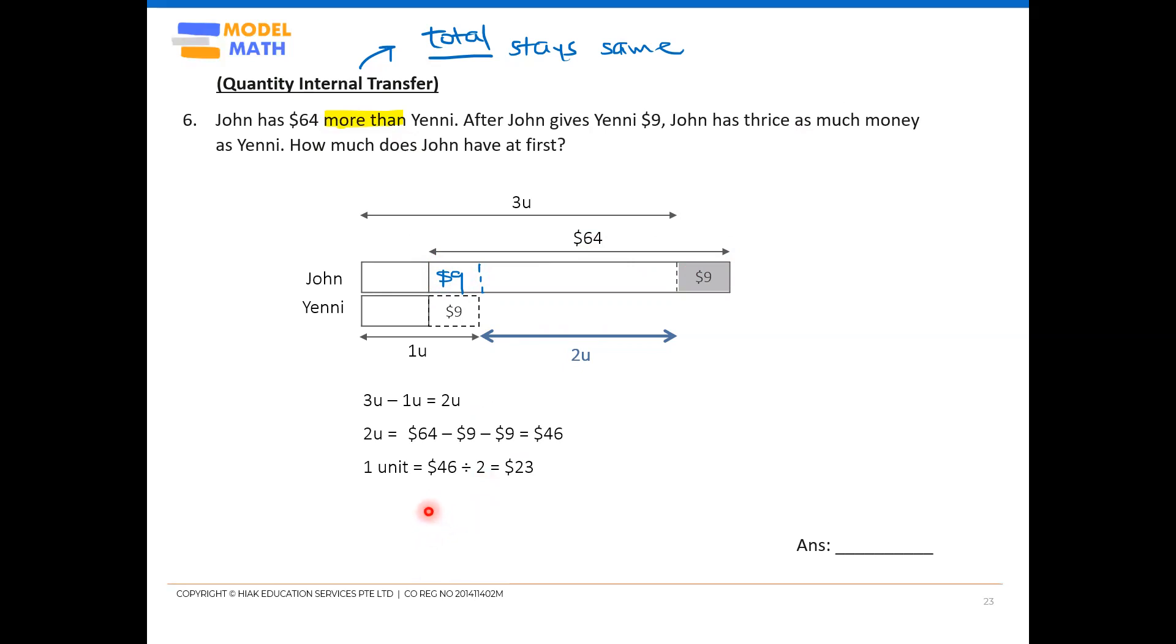So once this is done, read the question. They want John at first. Every time you want to reread the question, you want John at first. Now identify where is John's at first. So John at first, is it just the white portion or is it the whole thing? So your at first should be the whole thing. This $9 before he gave away was included in the at first. So everything here.